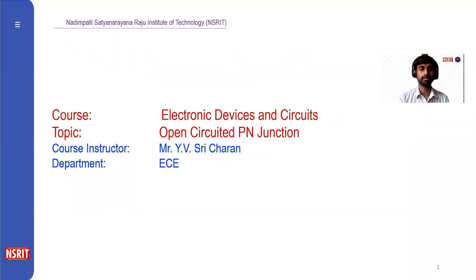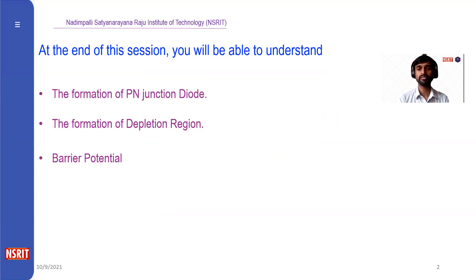Good morning class. In today's session, we will be seeing the formation of a p-n junction diode and its open-circuited operation. By the end of the session, you will be able to understand how a p-n junction diode is formed and its open-circuited operation, as well as some important terms like depletion region and barrier potential.